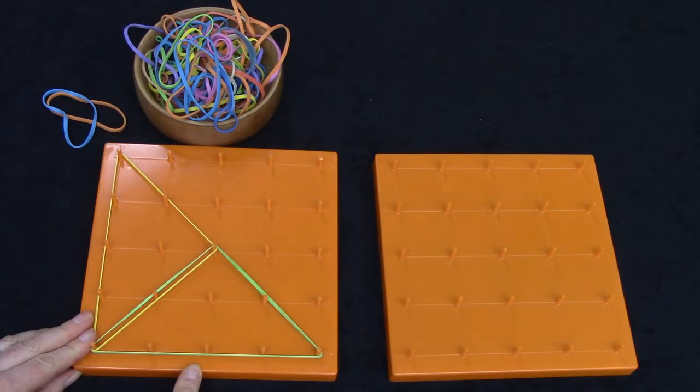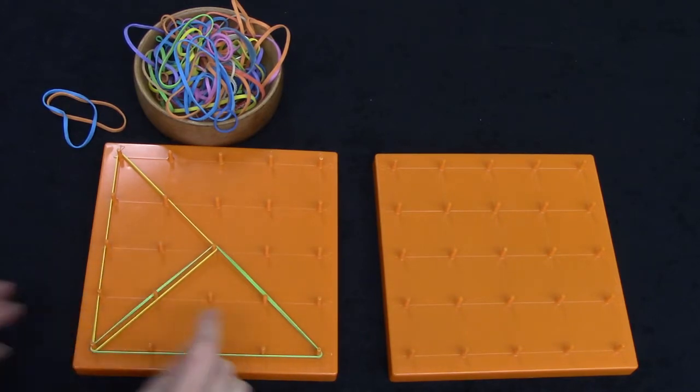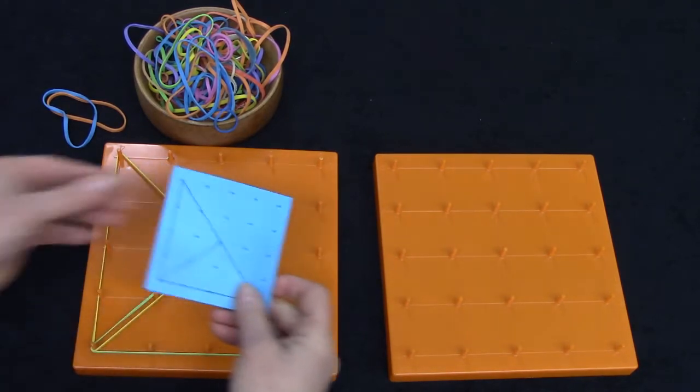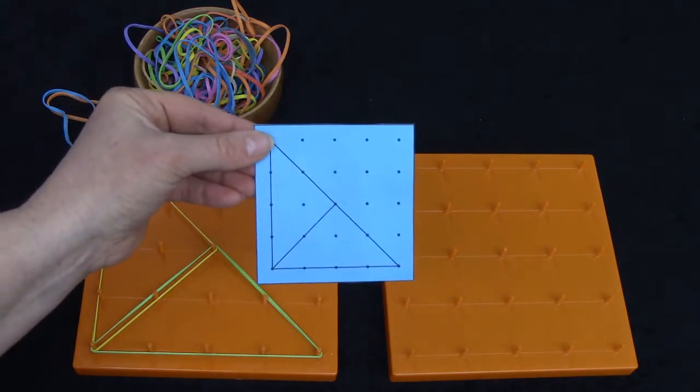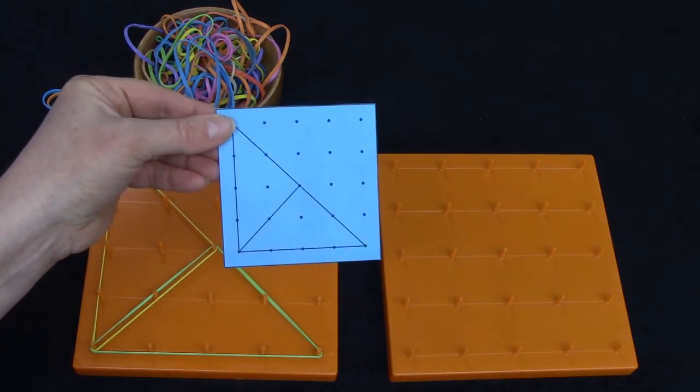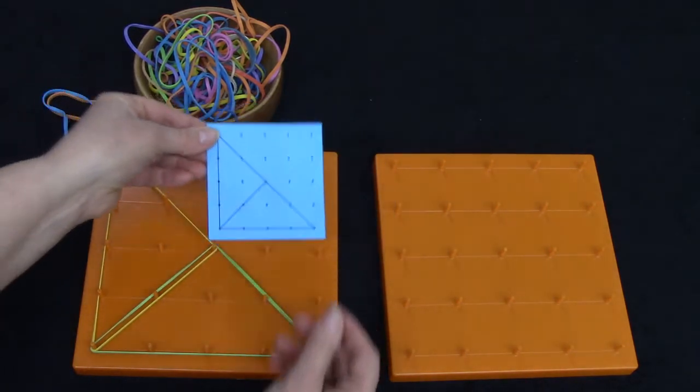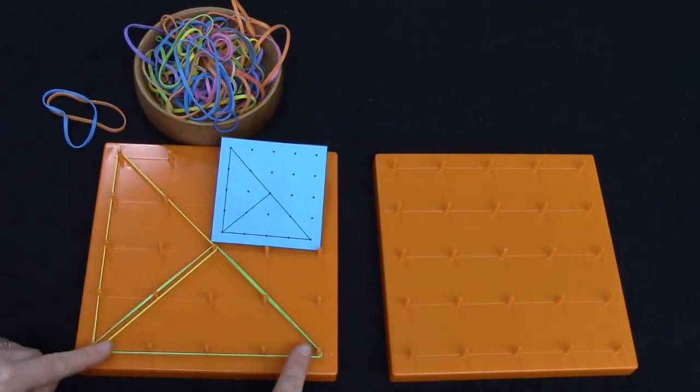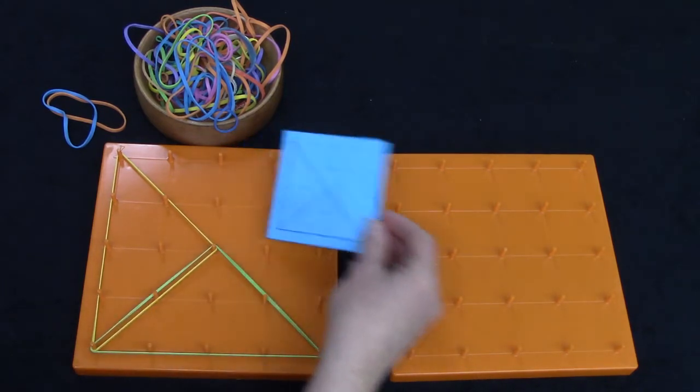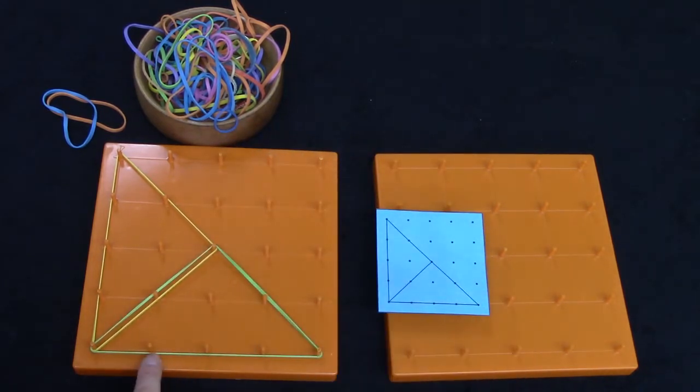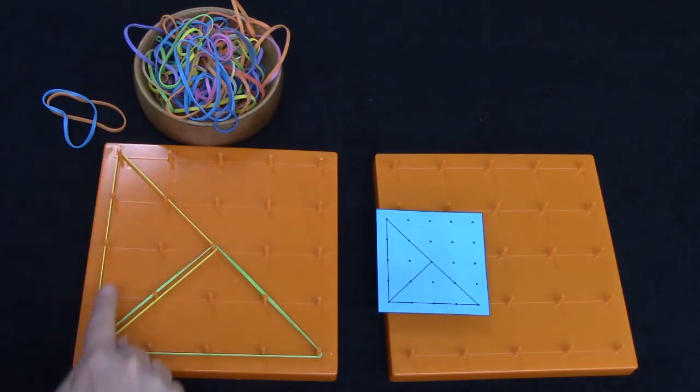I have just made two shapes on this geoboard. I was using this card as a little pattern. I have made two triangles right beside each other but I want you to look at it very closely. How many triangles do you see in this design? There's one triangle here. I used a yellow rubber band and there's another triangle here.